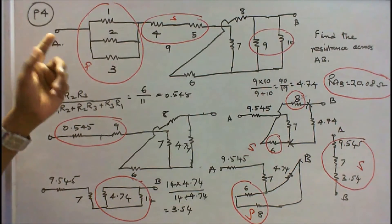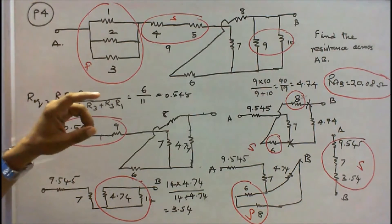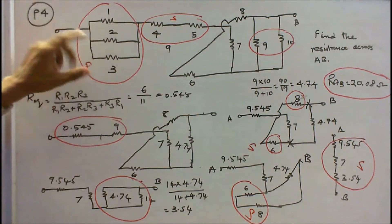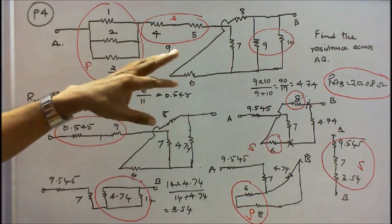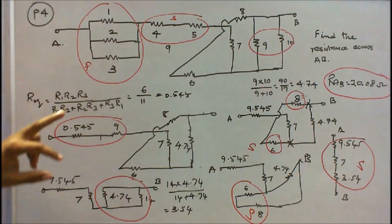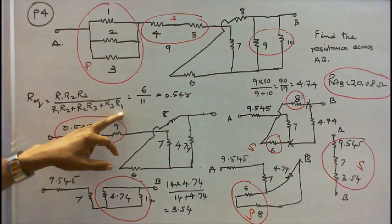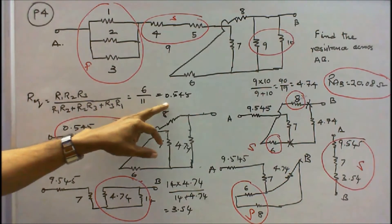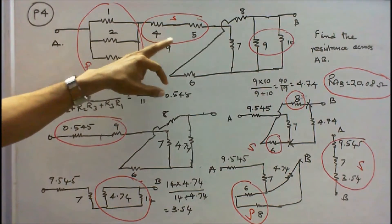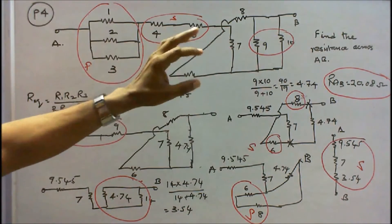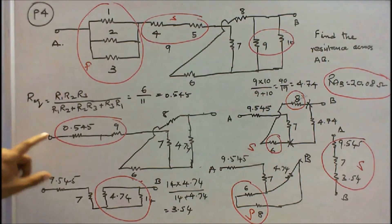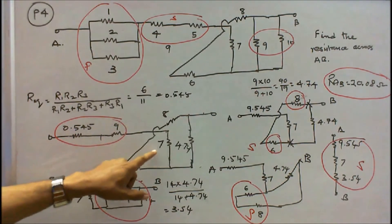Problem 4: 10 resistors connected as shown, find the total resistance across A and B. Resistors 1, 2, 3 are in parallel; resistors 4 and 5 are in series; resistors 9 and 10 are in parallel. For three resistors in parallel: R1×R2×R3 / (R1R2 + R2R3 + R3R1) = 6/11 = 0.545Ω. Resistors 4+5 = 9Ω; 9Ω and 10Ω in parallel: 9×10/(9+10) = 4.74Ω.